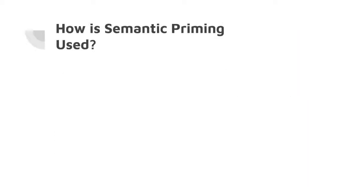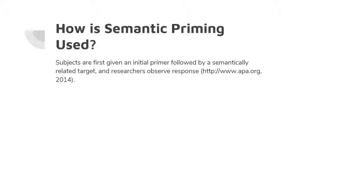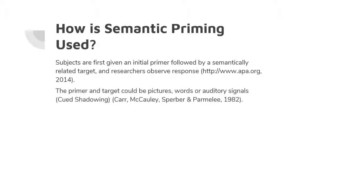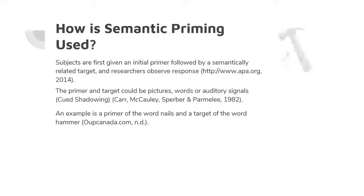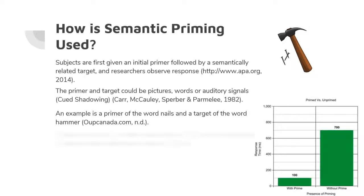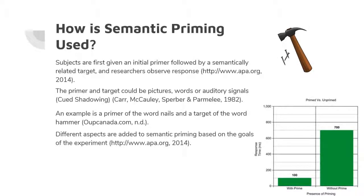Semantic priming is performed with a subject first being presented with a prime, followed by a semantically related target. The presented stimuli could be anything from pictures or words to auditory signals. For example, a prime of 'nails' can cause an increased response to the target 'hammer.' Different aspects can be added to basic semantic priming to gather data for different experiments, including eye-tracking or a distractor.